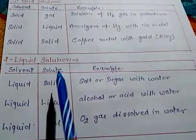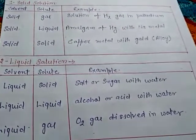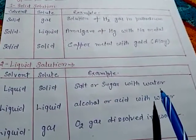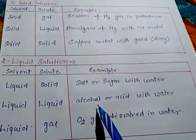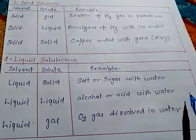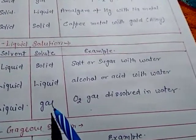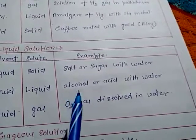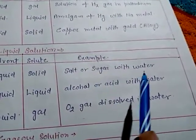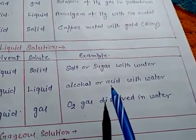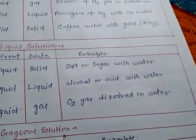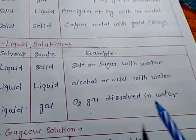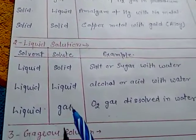In liquid solution, the solvent is always liquid and the solute may be solid, liquid, or gas. Solid plus liquid example: salt or sugar dissolved in water. Liquid plus liquid example: alcohol or acid with water. When salt or sugar is dissolved in water, a transparent solution forms. When acid is dissolved in water, it is also transparent.